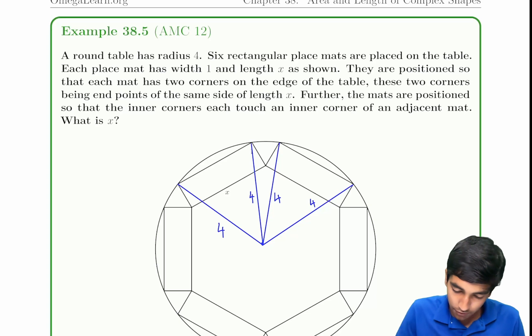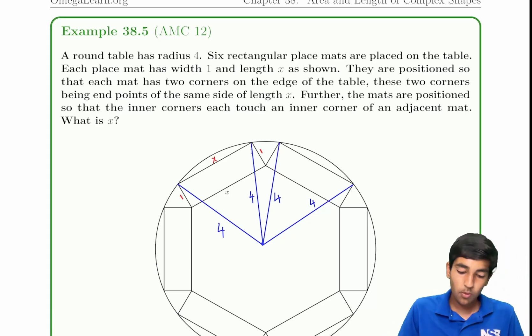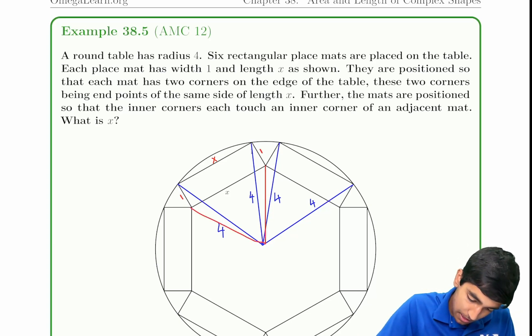We have all our radii drawn. You have to find the value of x and we know this is 1, x, this is 1. The first thing to notice here is we have six rectangular mats. What does six really mean? There's six-fold symmetry here. Let's partition this diagram into six pieces.